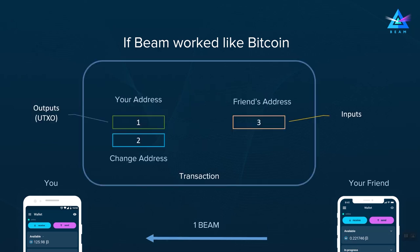What happens under the hood is that your friend's wallet will select some coins — in this example, a single coin that holds three BIM — and create a transaction using this coin as input. The output of this transaction will be two new coins: the one BIM that now belongs to you, and the two BIM change, which is usually assigned to a different address that belongs to your friend.